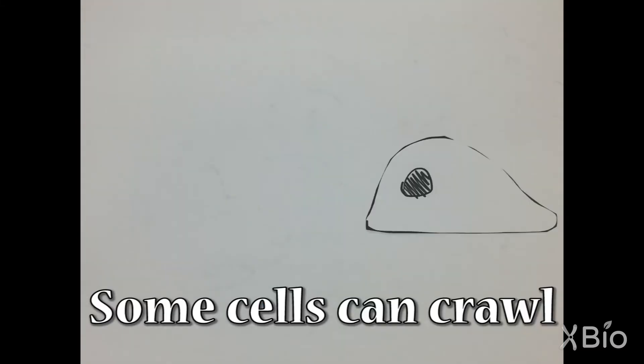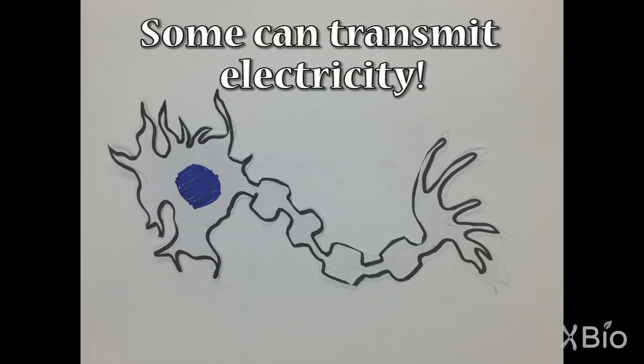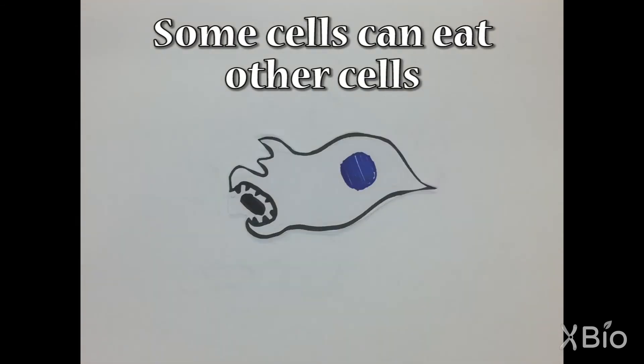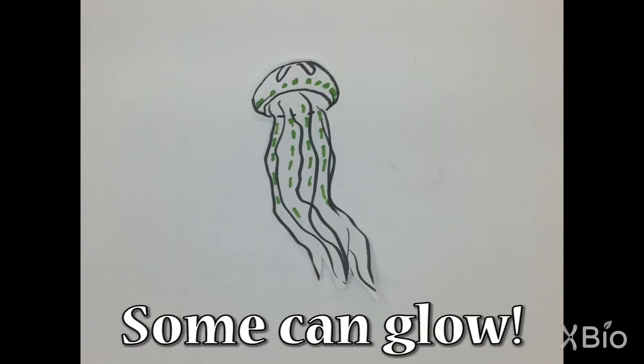Some cells can crawl. Some can transmit electricity. Some cells can eat other cells. Some cells can capture sunlight. Some can glow.